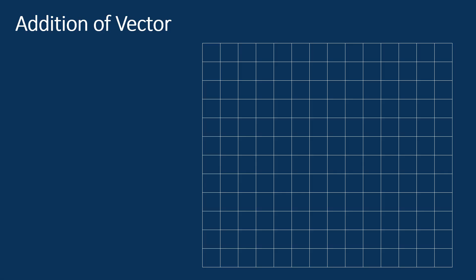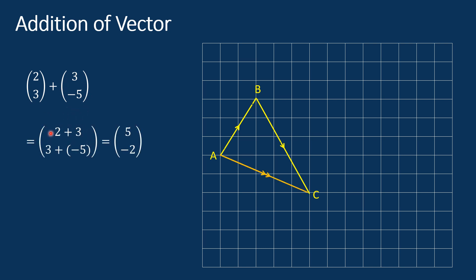Addition of vector. Vector addition is the process of adding two or more vectors together to produce a new vector representing their combined effect. To add two vectors, you simply add their corresponding components. For example, consider vectors (2, 3) and (3, −5). The x component is 2 + 3 = 5, and the y component is 3 + (−5) = −2. So the result is the vector (5, −2).